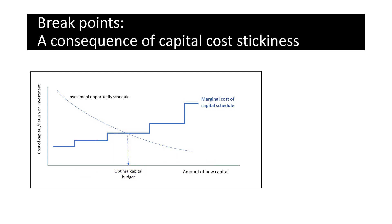Notice that WACC does not increase as a smooth upward-sloping curve. Instead, it adopts the stepped pattern shown in the diagram. The amounts of new total capital at which there are sudden jumps in the company's WACC are called break points. They occur because a company's costs of debt and equity are sticky and stay at the same level within limited ranges, before a point is reached where the new issue of capital causes an instantaneous increase in the relevant component cost of capital.